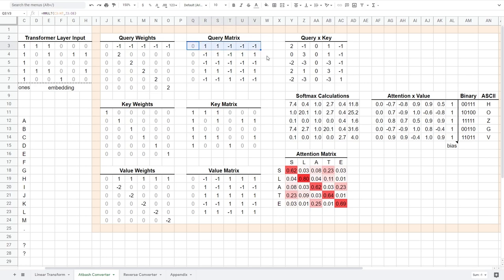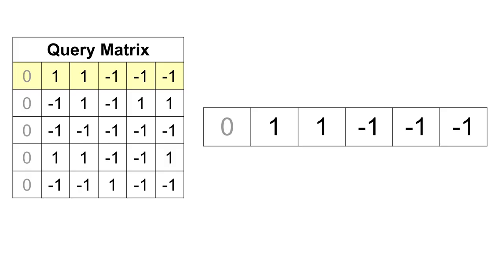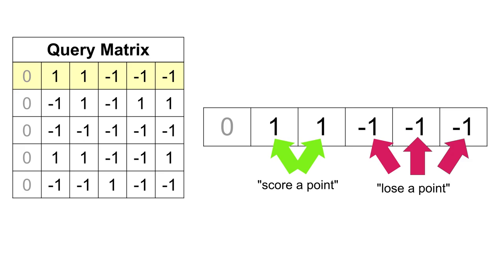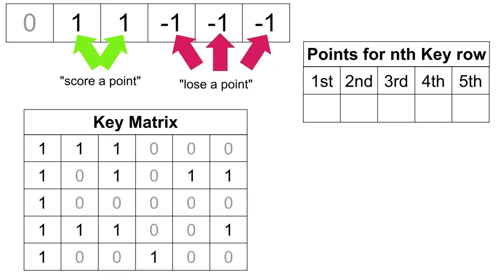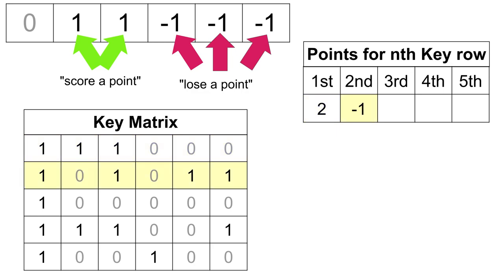Let's look at the first row of our query matrix to understand what's going on. One way to think about this query row is that it describes how the rows in the key matrix can score points. A key row could score one point if it has a one in the second or third column, and it can lose a point if any of the last three columns have a one — the first column will not score or lose any points. Taking this first query row and looking at just the first row of the key matrix: we ignore the first column, score two points for the second and third column, and do not lose any points for the last three columns — two points in total. These are sometimes called compatibility scores. The second row scores one point but then loses two points, for a total score of negative one.